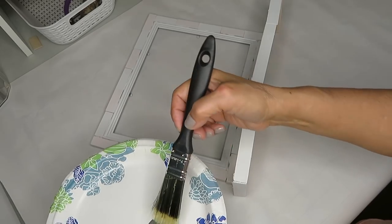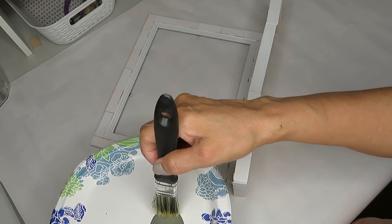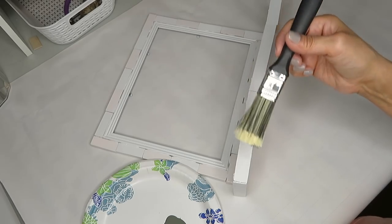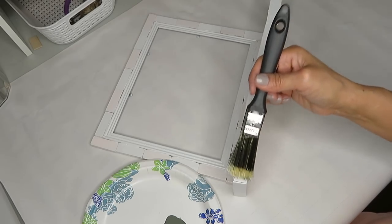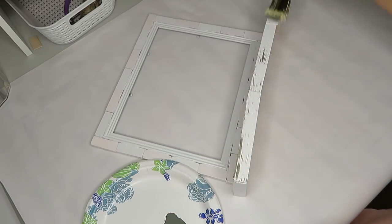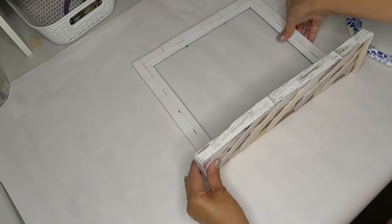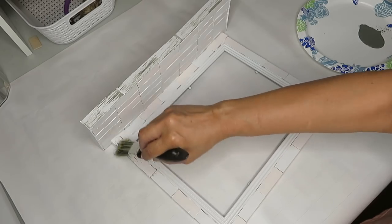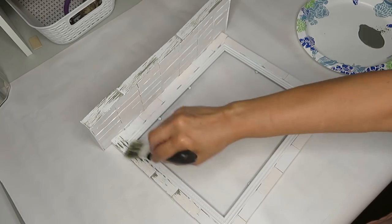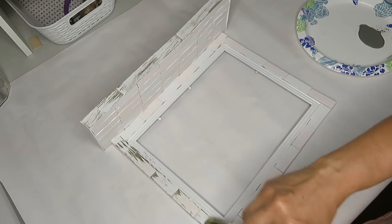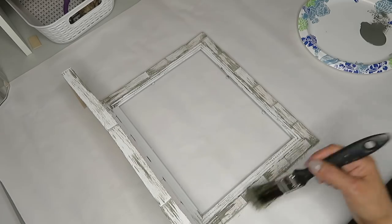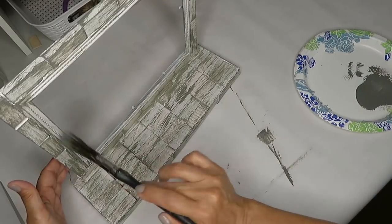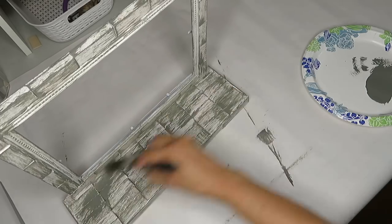I'm gonna start by adding a little bit of that gray paint to my paintbrush and the key is to put very little paint and start brushing it on very lightly. At first I went in with a very light hand but then as I looked at it I wanted it to have a little bit more color so I went heavier with the gray paint.